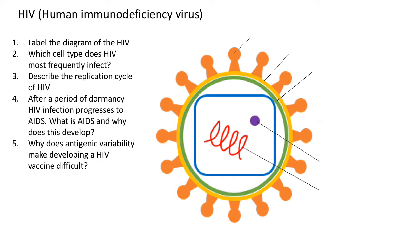This revision video is on HIV. There are five revision questions — pause, complete the questions, and then you can review your answers. Starting with the diagram of HIV, these are the labels you should have added.